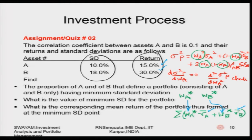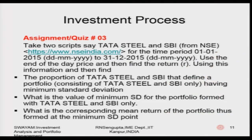A related problem uses real data: take two scripts — Tata Steel and State Bank of India — from NSE for January 2015 to December 2015. Using end-of-day closing prices, find the returns. From this information, find the portfolio weights defining the minimum variance, the value of the minimum standard deviation, and the corresponding mean return at the minimum variance point. The same methodology from the previous example applies.